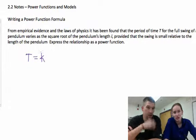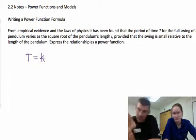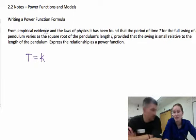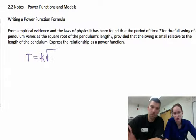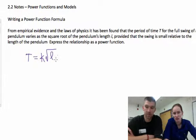So anytime we're reading this and it says varies as, it's going to be equals k. Yeah, equals k, and then everything else, unless they specify that you should use a different letter for your constant. Okay, sounds good. And then, as the square root of the pendulum's length L. So, square root of the pendulum's length L.